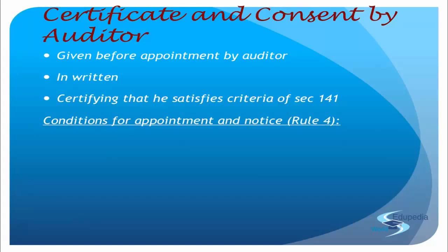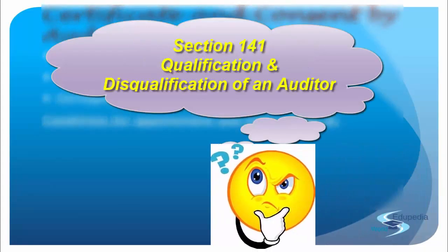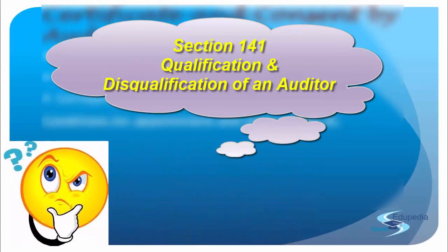So in writing, the auditor is supposed to give: consent that yes I am willing to take up the audit; that all the conditions prescribed have been fulfilled; and that I satisfy all the criteria of Section 141. Section 141 deals with qualification and disqualification of an auditor and will be covered later in this chapter. Please keep all your questions related to this section parked, because in the next one or two lectures we will take up that section.